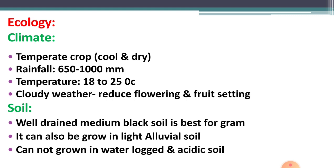Cloudy weather and frost conditions during the flowering stage reduce flowering and seed setting. When flowers are starting to form, cloudy or frosty conditions affect seed setting adversely. Additionally, rainfall immediately after sowing or during flowering may cause damage to the crop.